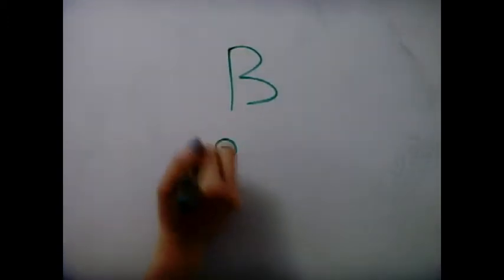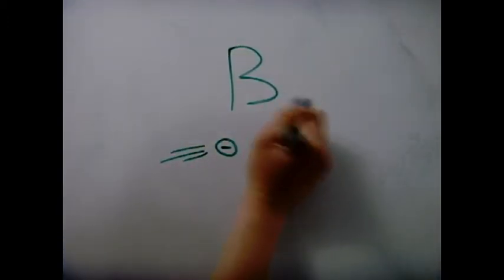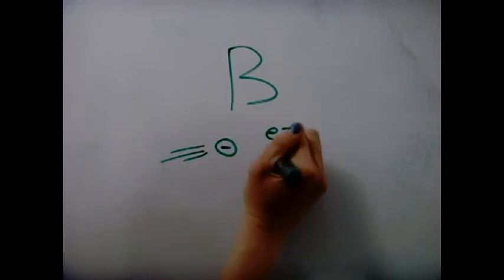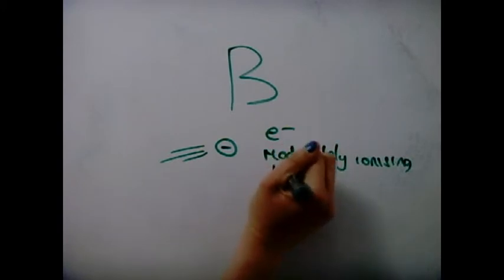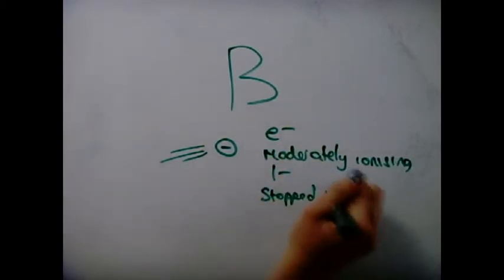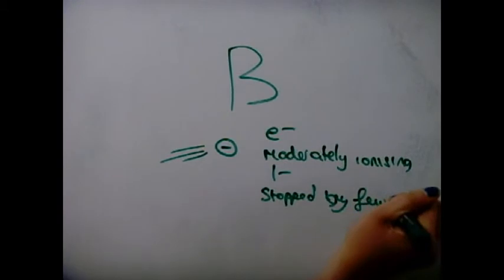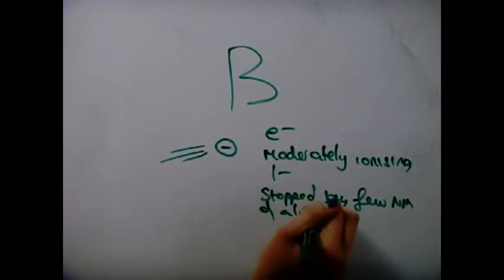Beta Radiation. When a neutron becomes a proton and emits out a fast moving electron, the fast moving electron is the beta particle. They have a 1 minus charge, therefore they are moderately ionising and moderately penetrating because they are stopped by a few millimetres of aluminium.